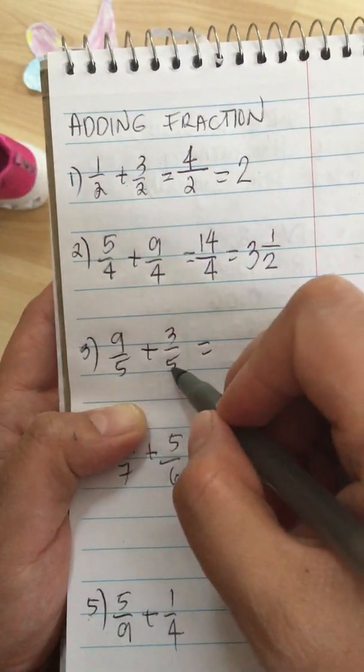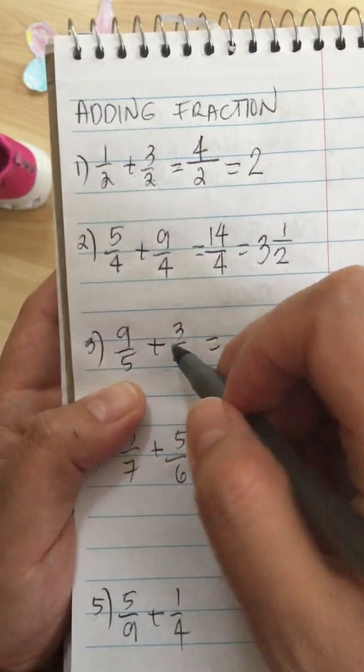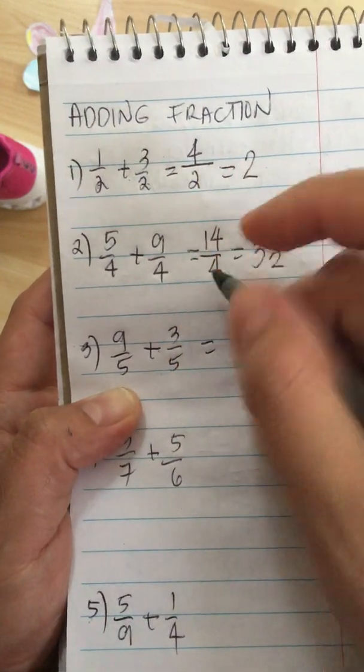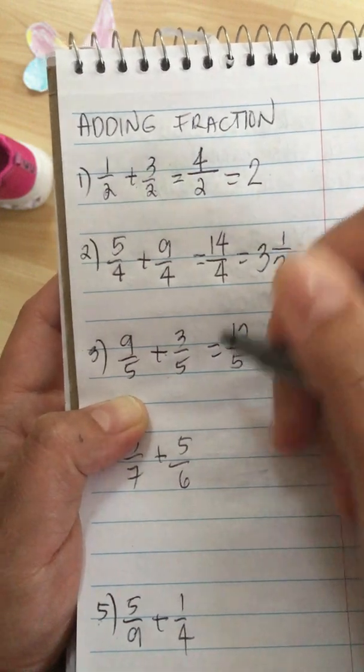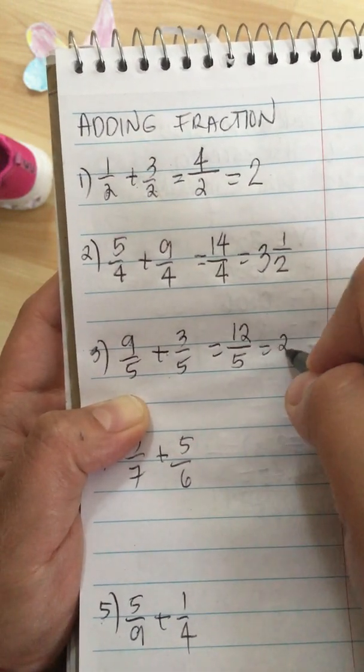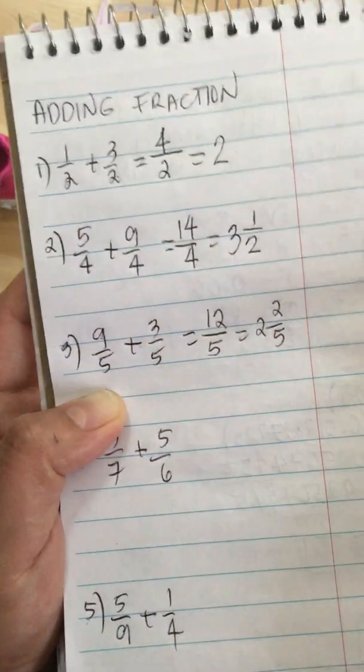So here they have the same denominator, so we can just add the numerator. 9 plus 3 is equal to 12 over 5, or also known as 2 and 2 over 5.